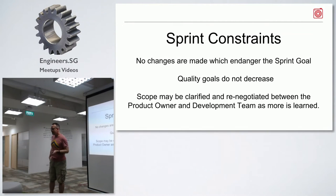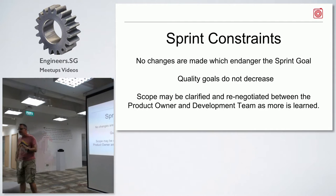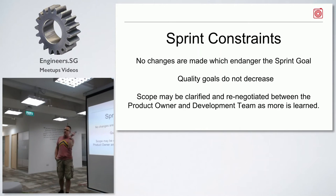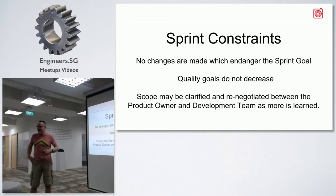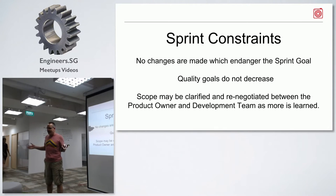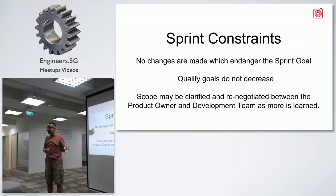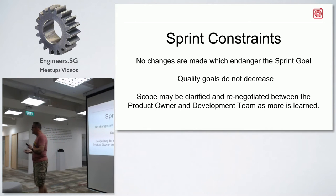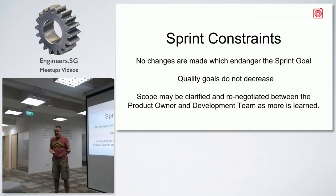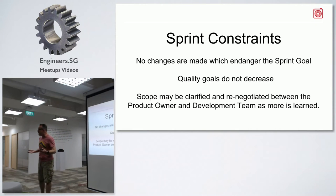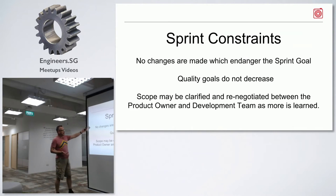Sprint constraints. There are a few constraints that you apply to any sprint that are critical for it to be successful. First: no changes are made which endanger your sprint goal. This means that when your CEO shows up having seen customers over the last week and says 'we've got to do this now,' the answer is no — we already have a goal, we're going to finish that. That's where you need a strong Scrum master who's willing to say we're not going to take that. There is a whole process for abnormally terminating a sprint, but no changes are made which endanger the sprint goal.